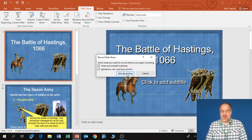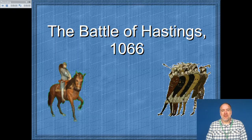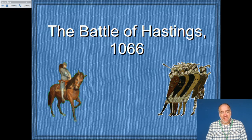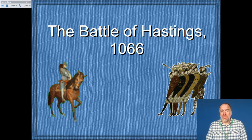It will start recording. I'll just do a quick demonstration. Good morning Year 7. Welcome to the most exciting lesson of the year about the Battle of Hastings in 1066. We're going to look today at why William, Duke of Normandy, won this battle. So let's see how the two sides lined up.